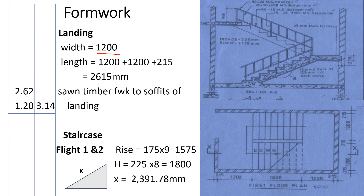Formwork for the landing is booked in square meters. We book it as 2.62 (the length) multiplied by 1.2 (the width), giving us 3.14 square meters. We describe this as: sawn timber formwork to the soffit of the landing.